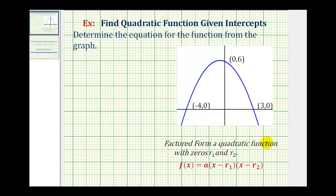The factored form of a quadratic function with zeros r sub one and r sub two can be given by f of x equals a, a constant, times a factor of x minus r sub one, times the factor of x minus r sub two.